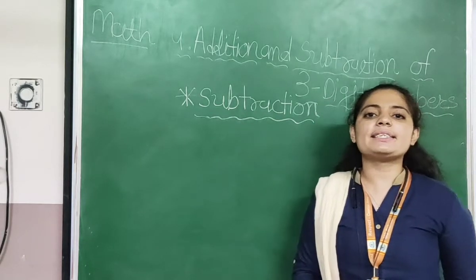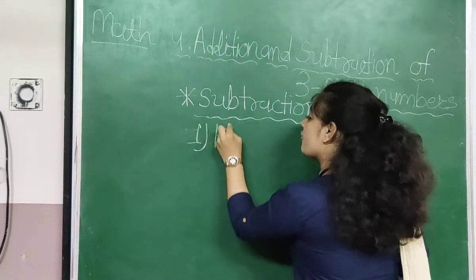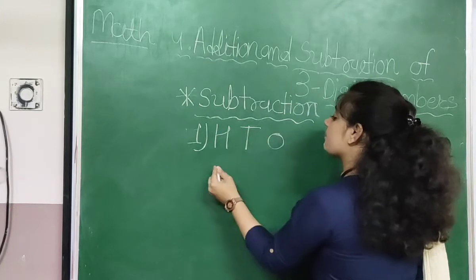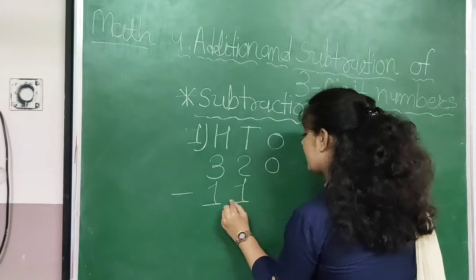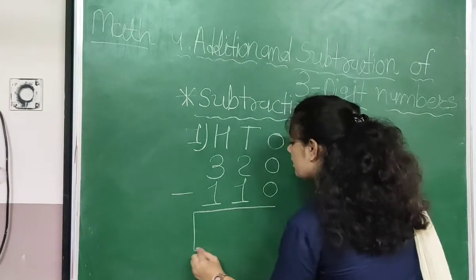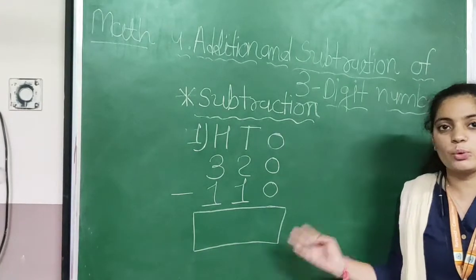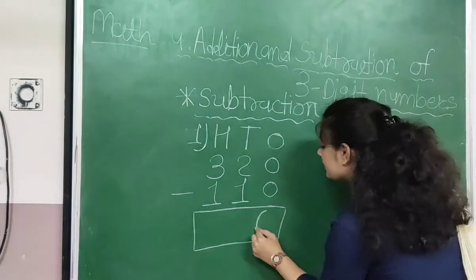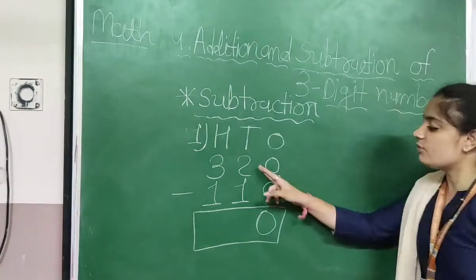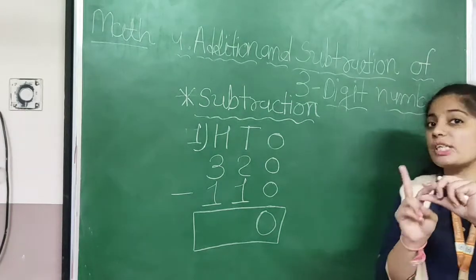Students, let's look at example number 1. This is a simple subtraction sum. 0 minus 0 — the answer will be 0. 2 minus 1. 3 minus 1, so the answer is 1.